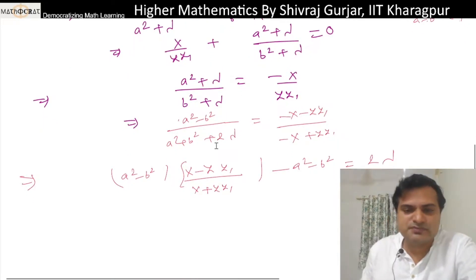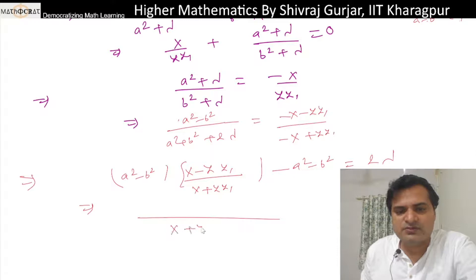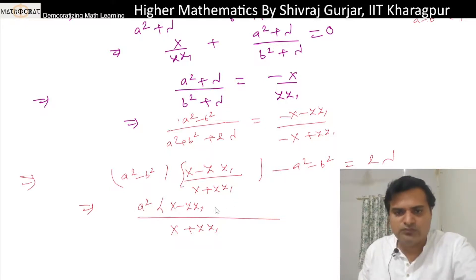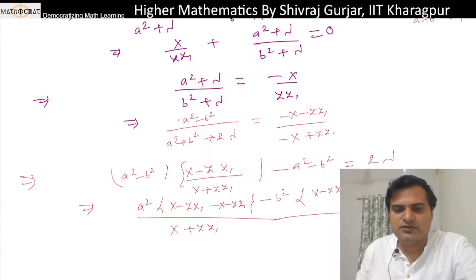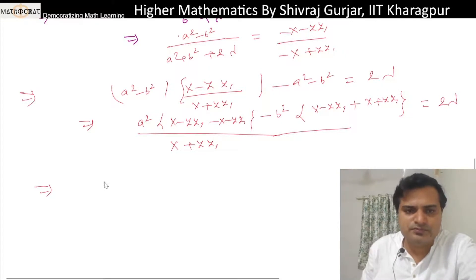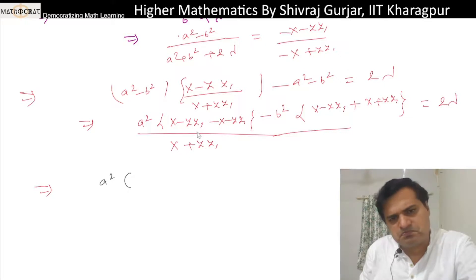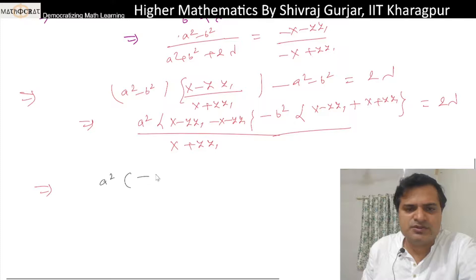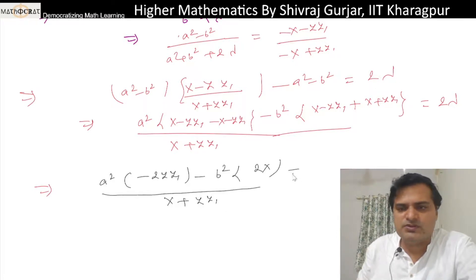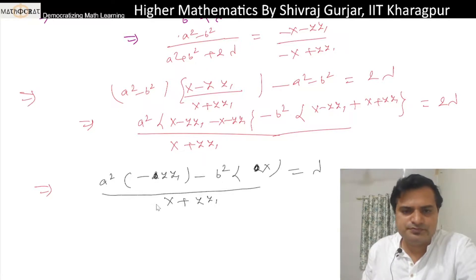Now substituting the lambda value using x plus y·y₁: a² coefficient of (x minus y·y₁) minus b² times (x plus y·y₁) — both x's cancel giving minus 2y·y₁, and minus b² gives 2x — all equals 2·lambda. The 2's cancel.